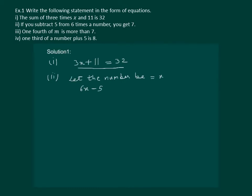you get 7. It is equal to 7. And 6x minus 5 equal to 7 is the required equation.